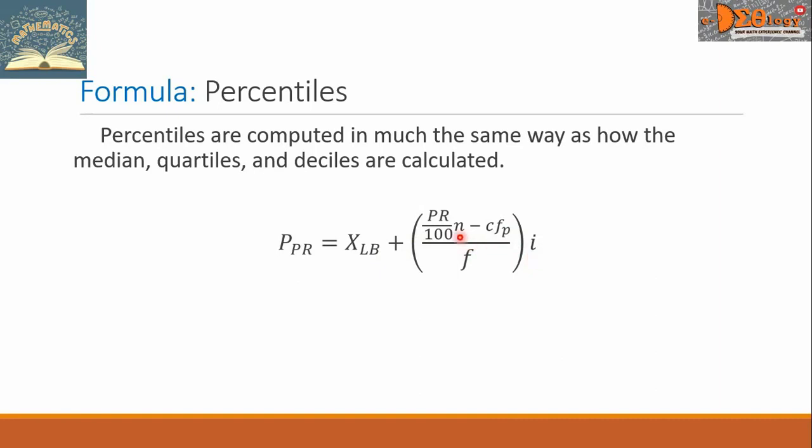The N here is the total number of cases. Take note that the 50th percentile is equal to the median, which is also equal to the second quartile, and also equal to the fifth decile.